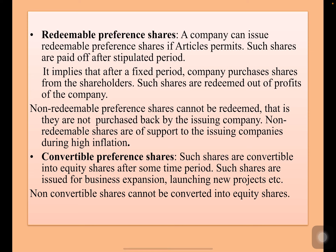Redeemable preference shares: a company can issue redeemable preference shares if the articles permit. The articles is an important document of a company. Such shares are paid off after a stipulated period, meaning that after a fixed period the company purchases shares back from the shareholders. Such shares are redeemed out of the profits of the company.